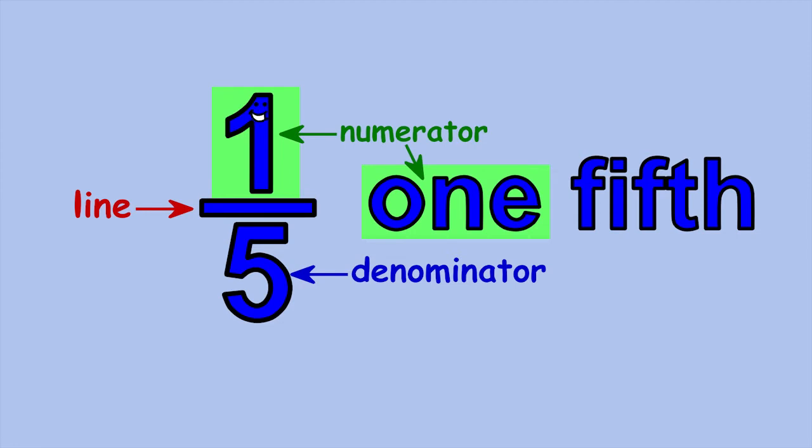The first part of my name is just the name of the number that's my numerator, 1. And the last part of my name comes from my denominator. When the number 5 is written below the line, you say 5th instead of 5. So I'm 1 5th.